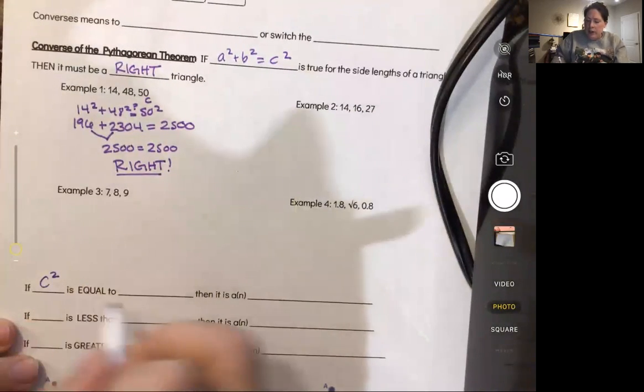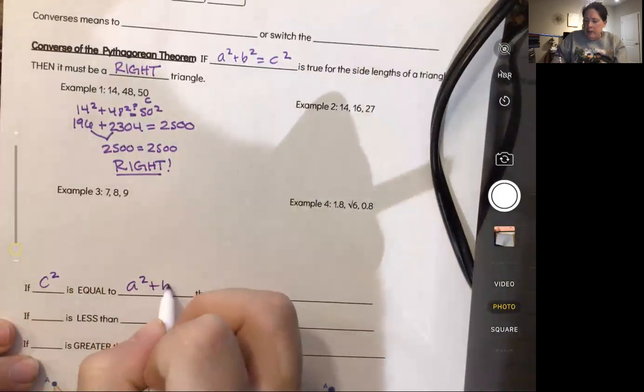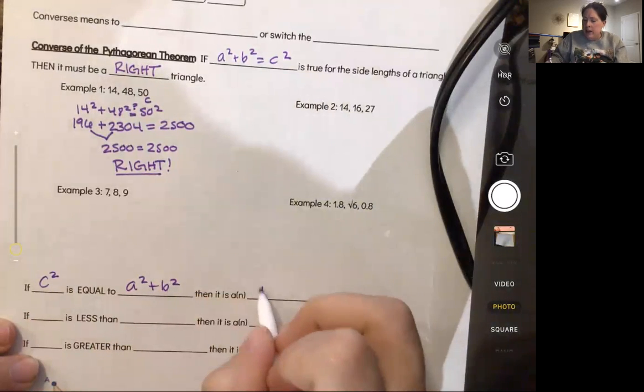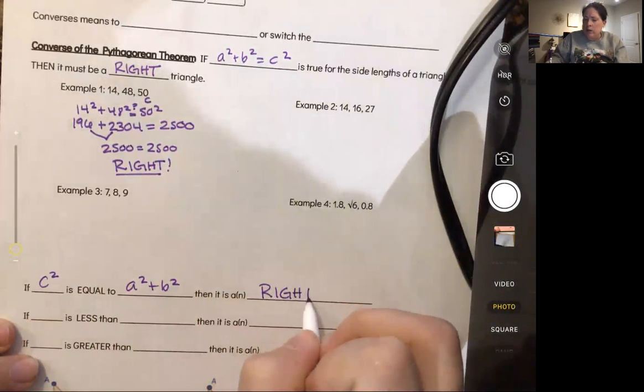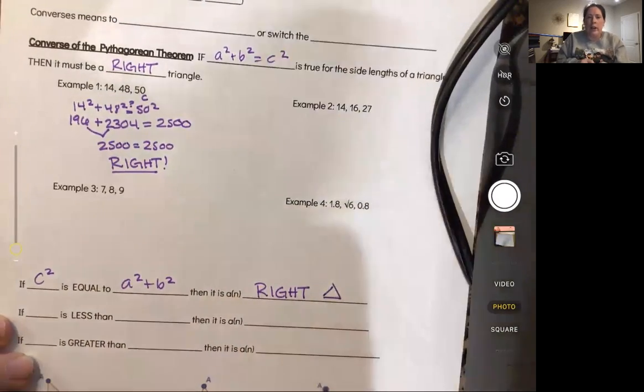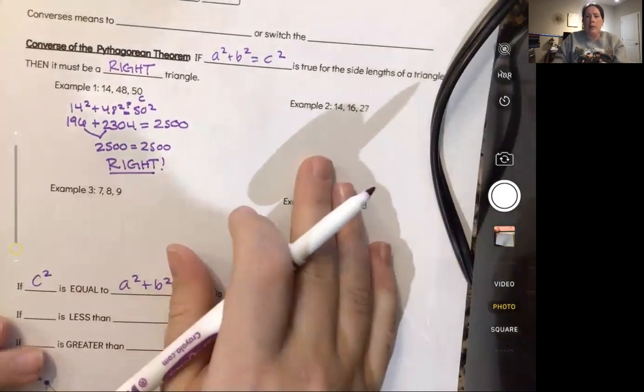If c squared is equal to a squared plus b squared, then it is a right triangle.